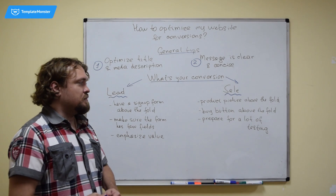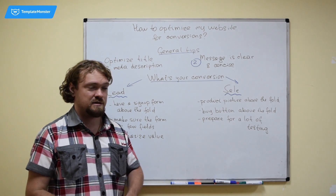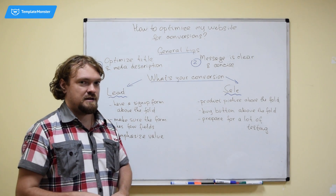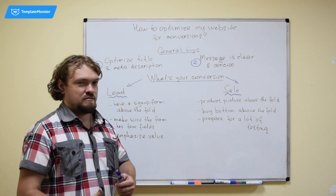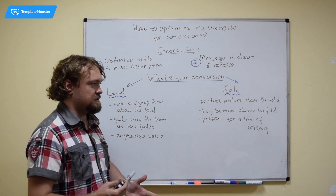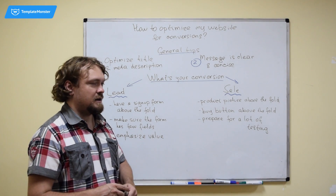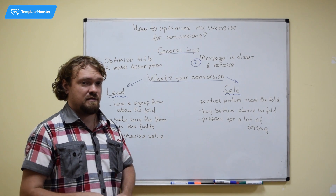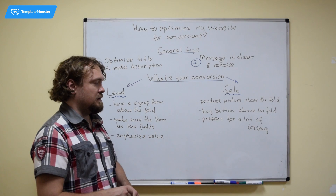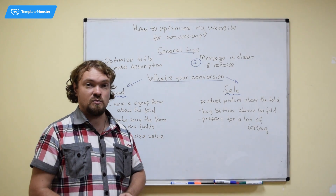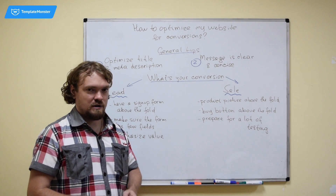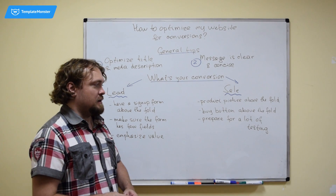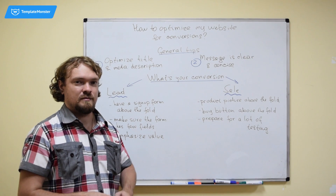With sale generation pages, it's somewhat similar. You want to have your product picture above the fold because the internet these days is very visual. People don't read much on pages — they identify products using visual images. So have a visual image of your product above the fold. You also want a buy button above the fold, because people don't want to scroll and search for the buy button. They want everything, and they want it now.